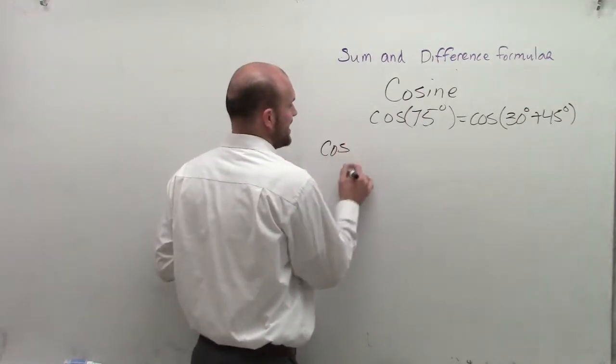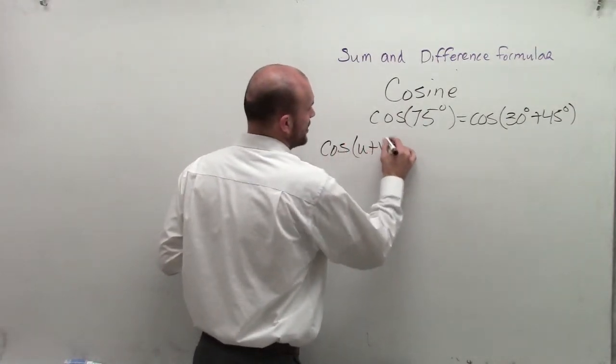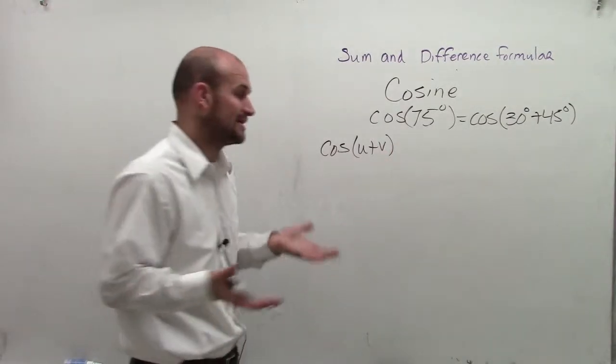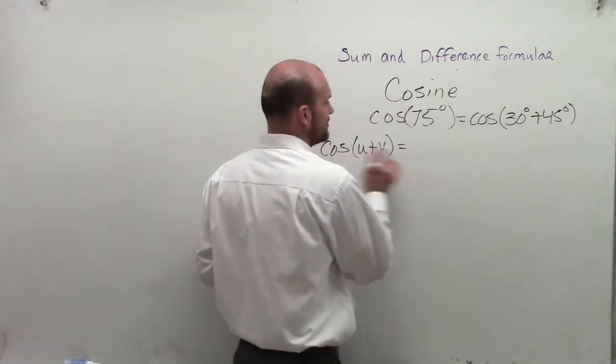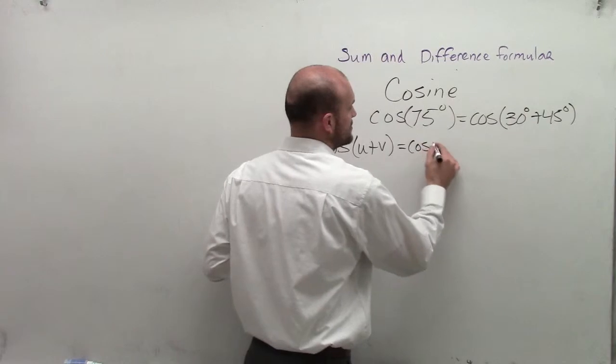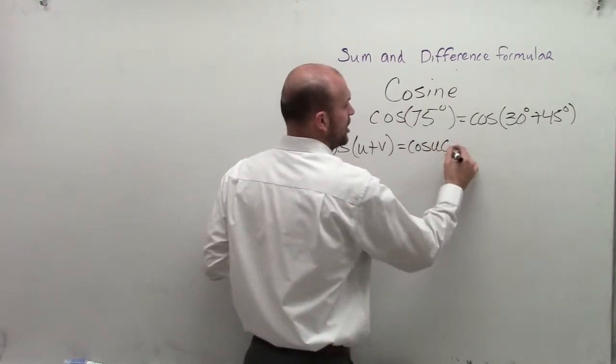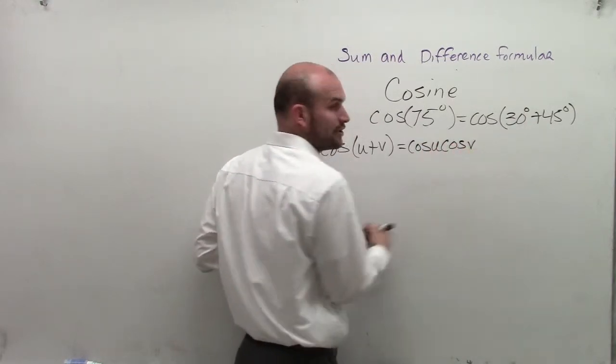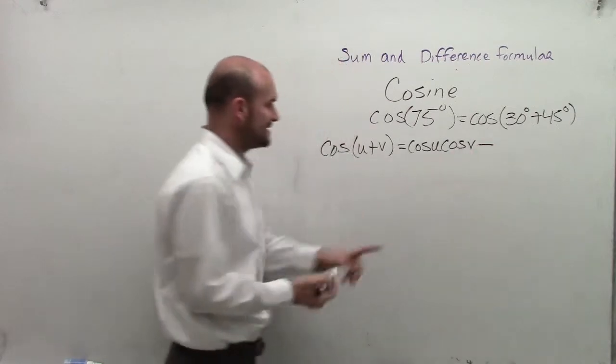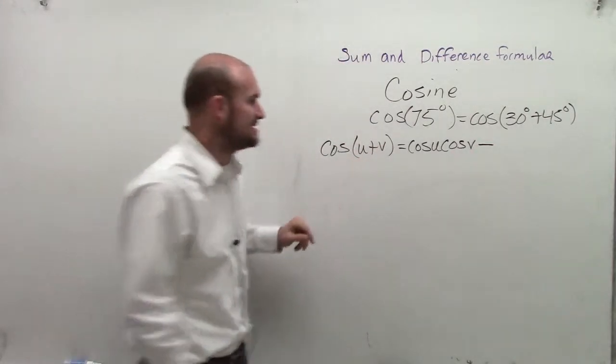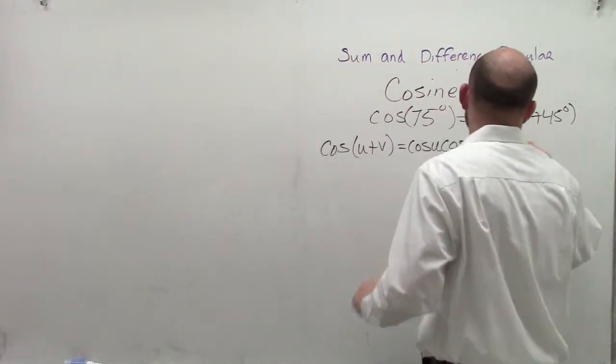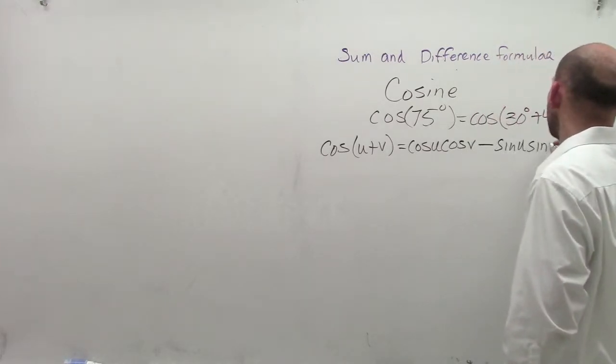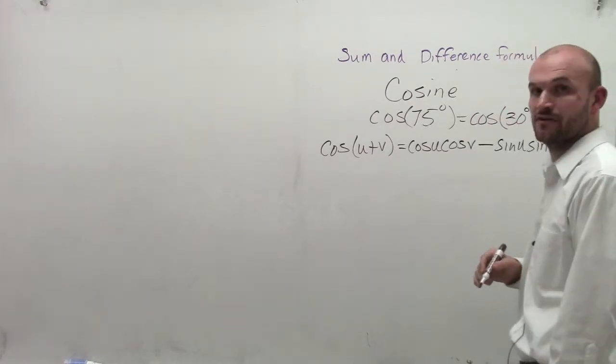The formulas go like this. If I have cosine of two smaller angles that I can evaluate for to get the exact answer, the formula is: take the cosine of angle u, multiply it by the cosine of angle v, then subtract—make sure it's the opposite sign—times the sine of angle u, times the sine of angle v.